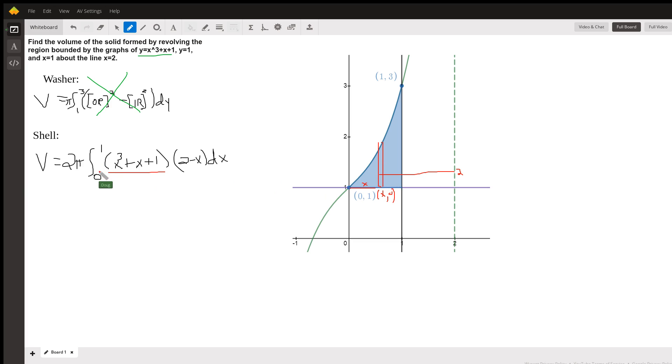And so this is what we have to evaluate right here. Now, how are you going to do that? Well, you're going to multiply this binomial times this trinomial. So then you're going to take an antiderivative of that result.